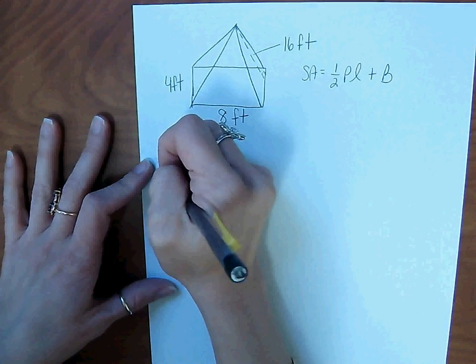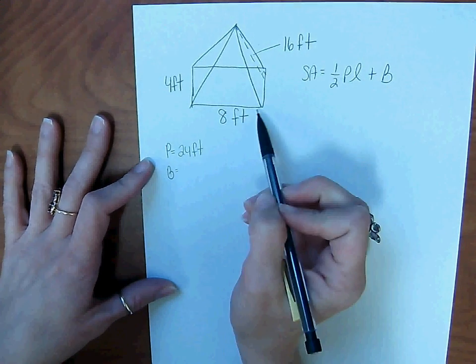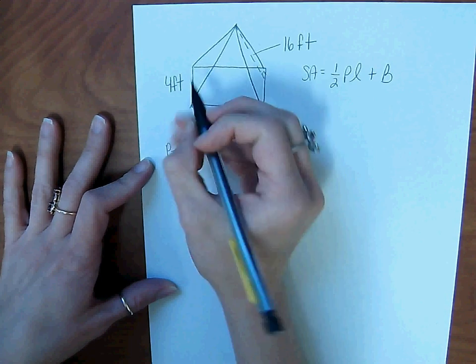Big B, area of the base. So length times width is 32 feet squared.